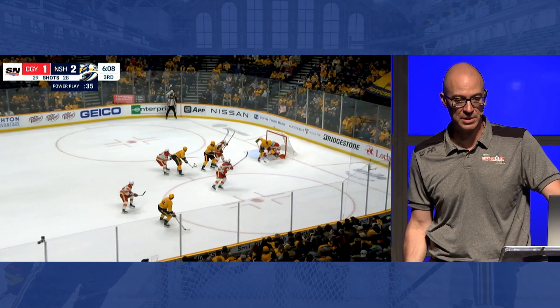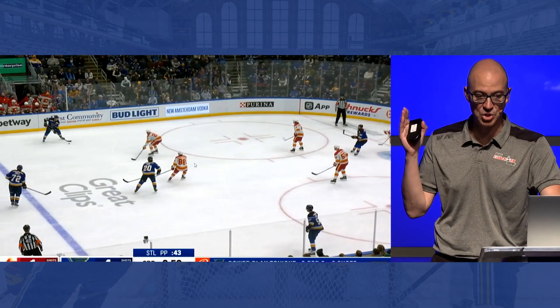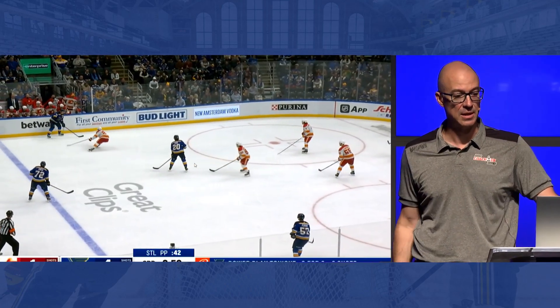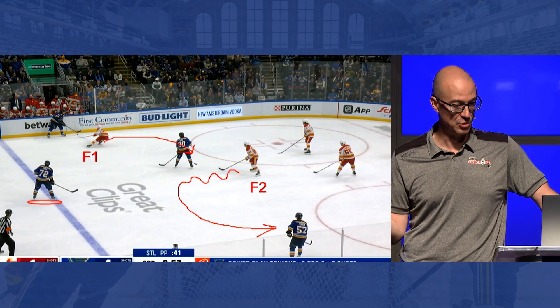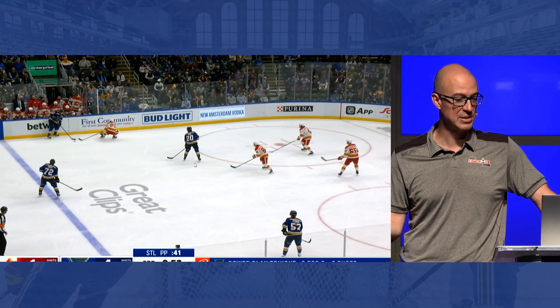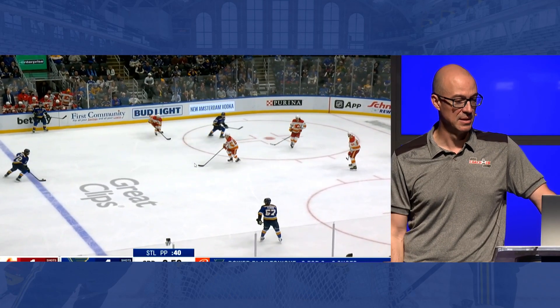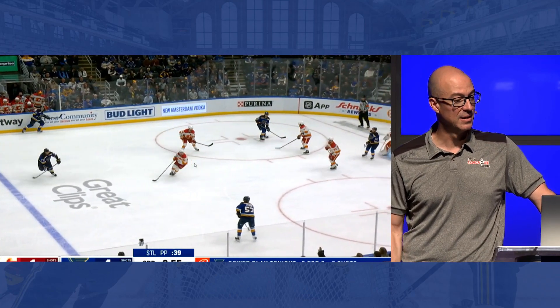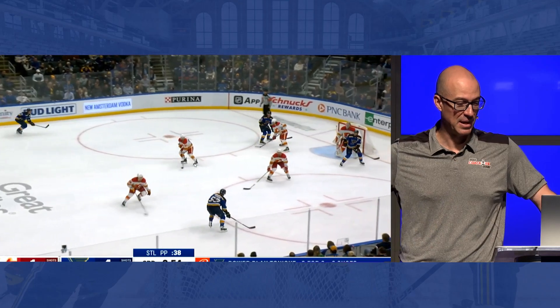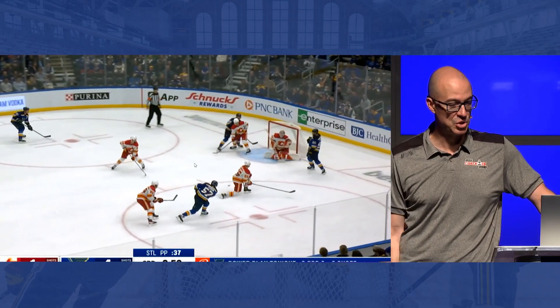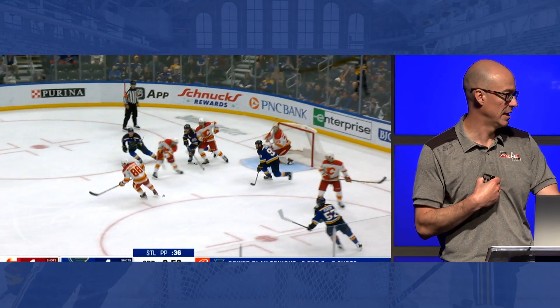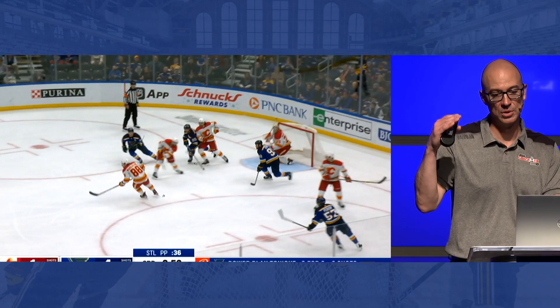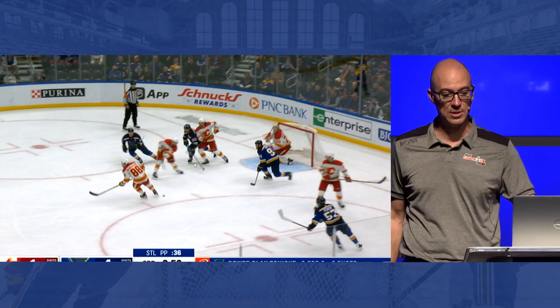And that's what you want your goaltenders to have to see — shots from the outside. One last example: lose pressure, obvious where that D-man is. Partner in lane, here comes the pressure. They want to shoot from there, we're in a position where we can get in lanes and make our goalie's job much easier.